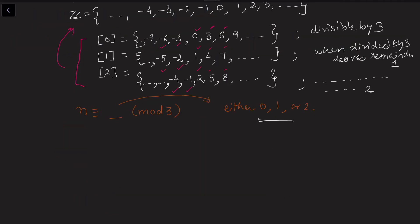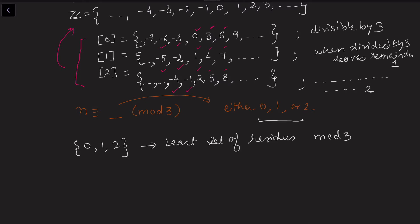In fact, the set {0, 1, 2} is known as the least set of residues, because these are the least possible non-negative choices with respect to mod 3. Now let's take any other set, for example {6, 7, 8}, and check whether this is a complete set of residue or not. To be a complete set of residue, we need to check three simple conditions.